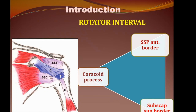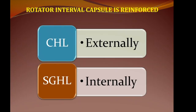We will talk about the anatomy of the rotator interval. The rotator interval is a triangular-shaped space in the anterosuperior aspect of the shoulder, bounded by the coracoid process at the base. The superior border is formed by the supraspinatus anterior border, and the inferior border is formed by the subscapularis superior border. The rotator interval capsule is reinforced by two important structures: the coracohumeral ligament externally and internally by the superior glenohumeral ligament.